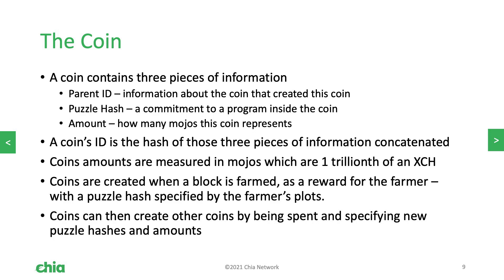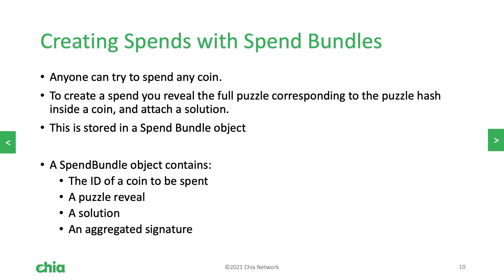New coins are created when a block is farmed, and when they're created this way, they are locked up with the puzzle hash that is a part of the farmer's plots. Once a coin has been created, it can then create other coins by running the puzzle that's inside it. To spend a coin, you must reveal the full puzzle corresponding to the puzzle hash locked inside the coin, and attach a solution.